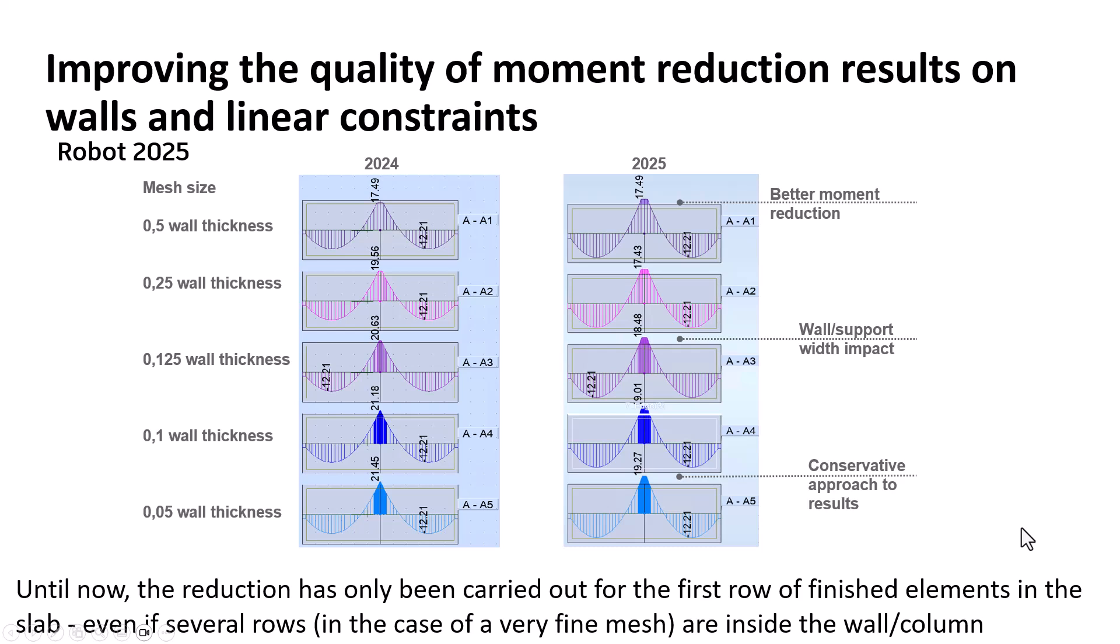And so analysis previously was carried only on the first row of finite element. But if you have a lot and it's much more thinner, you need to look at more than the first row. And now we look at more than the first row. Here's the detail.